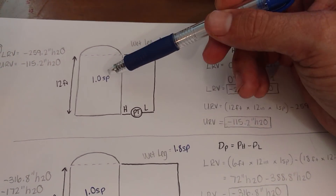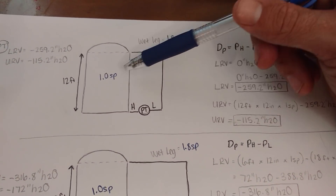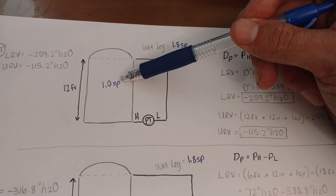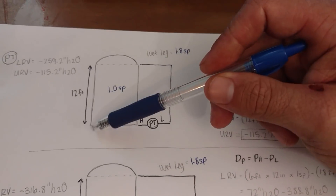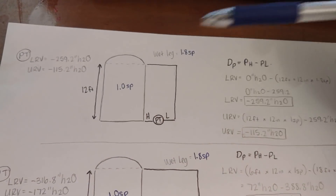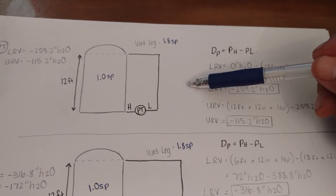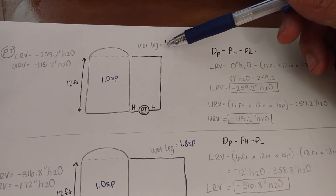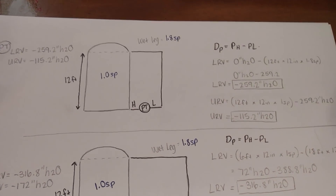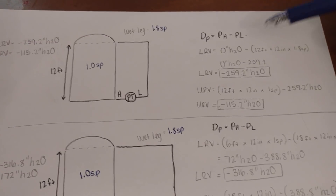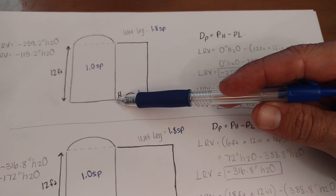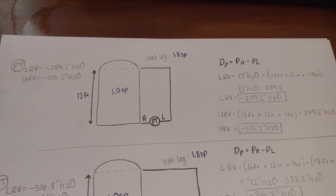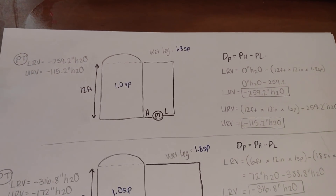In this situation, we have a tank. It's filled with water — we know that because the specific gravity is 1 — and it's 12 feet high. We have a wet leg over here that has a specific gravity of 1.8, so we know it's more dense than water. Here's our pressure transmitter, here's our high side, here's our low side. Let's find the upper range value and the lower range value.